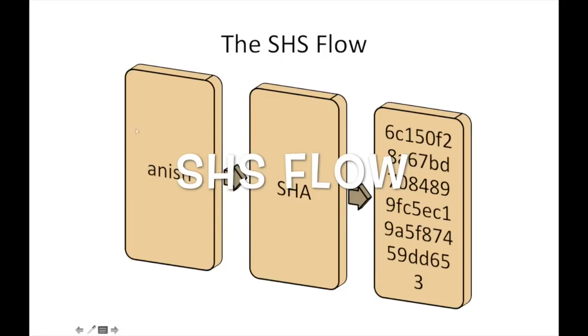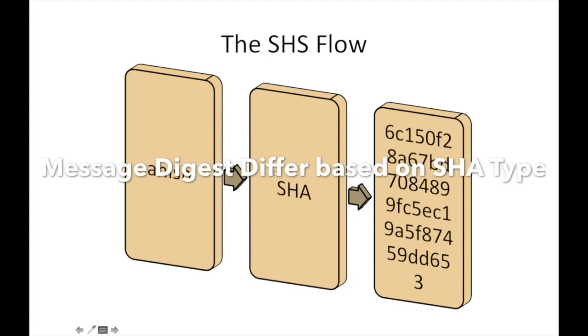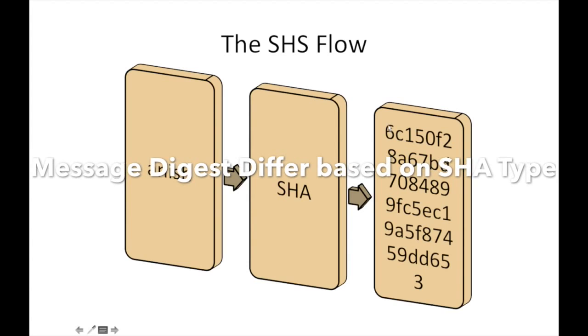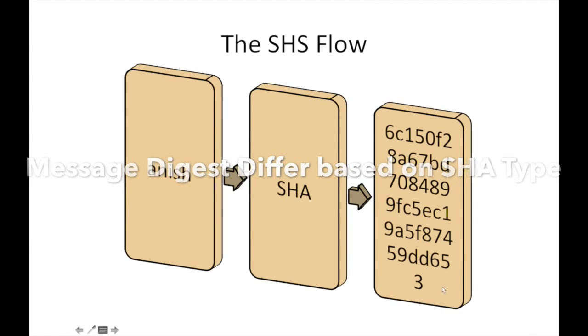The typical SHA flow is: given a clear text and an algorithm, it will produce a message digest. In this example, I have a clear text with the name Anish. Given this input to the one-way hash function SHA, it produces a message digest. The message digest will vary based on the type of algorithm we choose. In case of SHA-1, the message digest will be of 160 bits with 512 block.